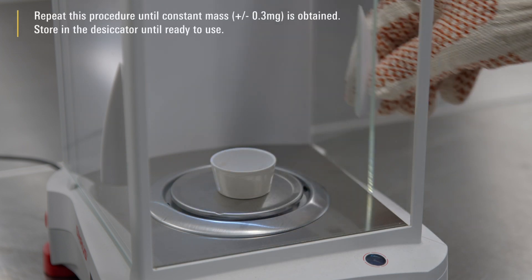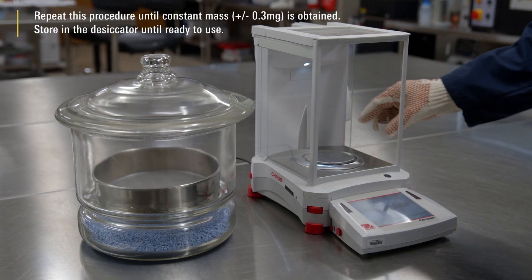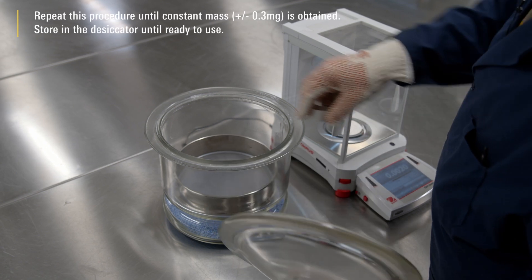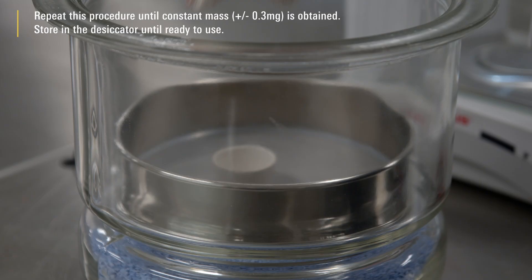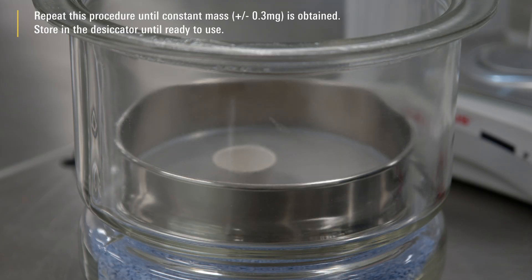Repeat this procedure until constant mass, ±0.3 mg, is obtained. Store in the desiccator until ready to use.